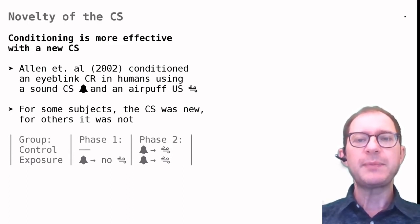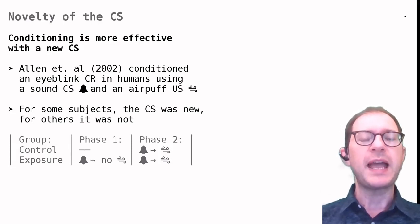As indicated in the table there were two groups of rabbits. The control group underwent the usual Pavlovian conditioning with a sound CS and an air puff aimed to the eye as a US. A second group, which we call the exposure group, underwent the same Pavlovian conditioning, but before that it received presentations of the sound not followed by the air puff.